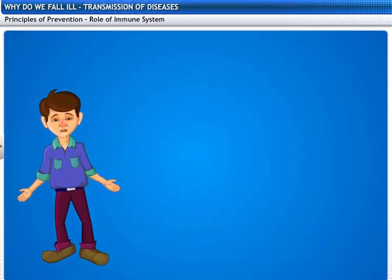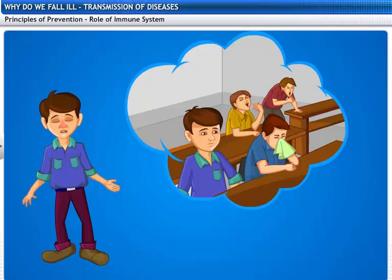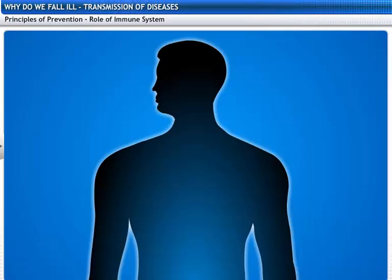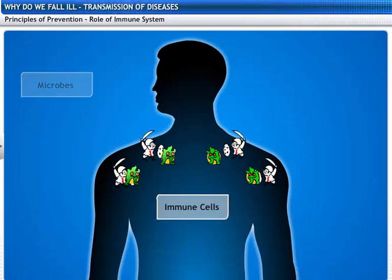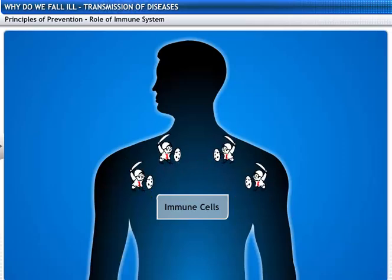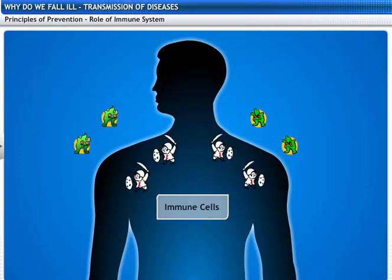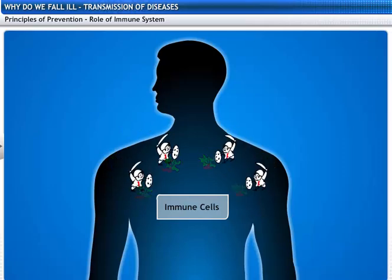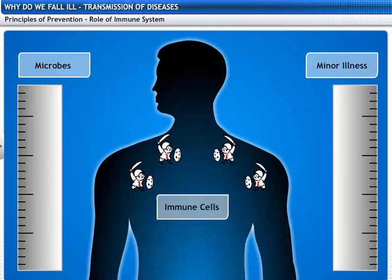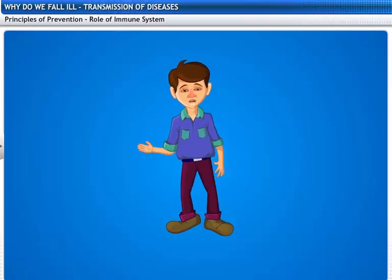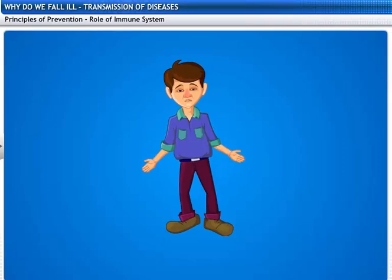One of my schoolmates was suffering from a cough and cold last week. Why weren't all the people around him getting the same infectious disease? This happens because the immune system of our body is fighting against the microorganisms. The human body has some cells specialized in fighting with the microbes. These cells fight with the microbes as soon as they enter the body. If these cells are successful, we may not be infected by a disease. If the number of microbes can be controlled by immune cells, the symptoms of illness will be minor. The chance to get an infectious disease depends on how efficient our immune system is.